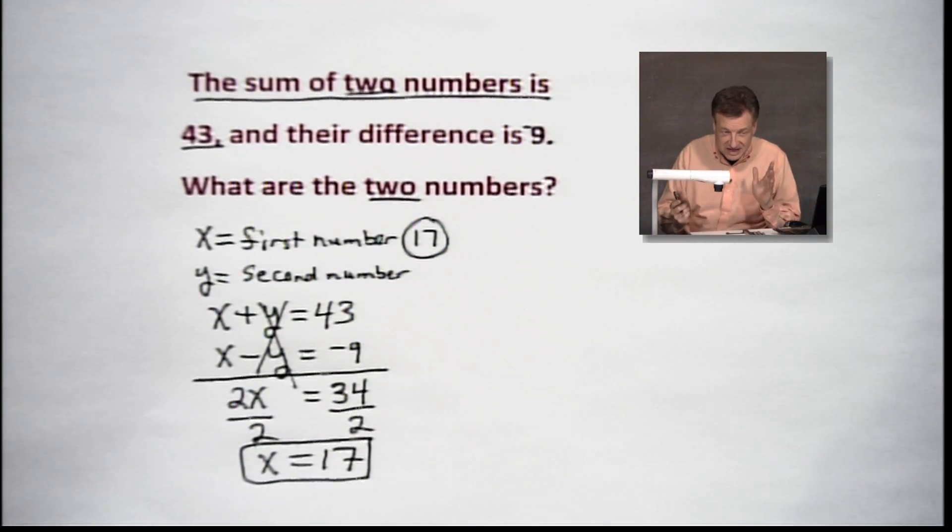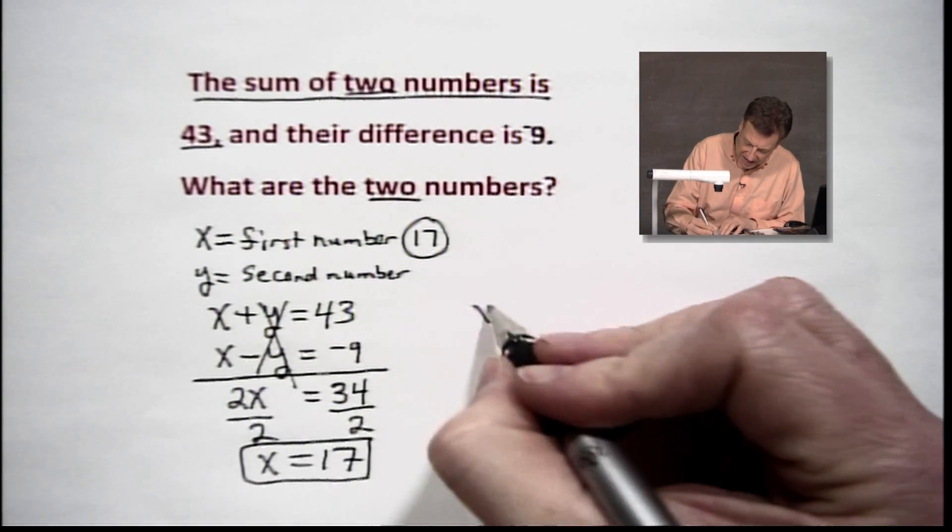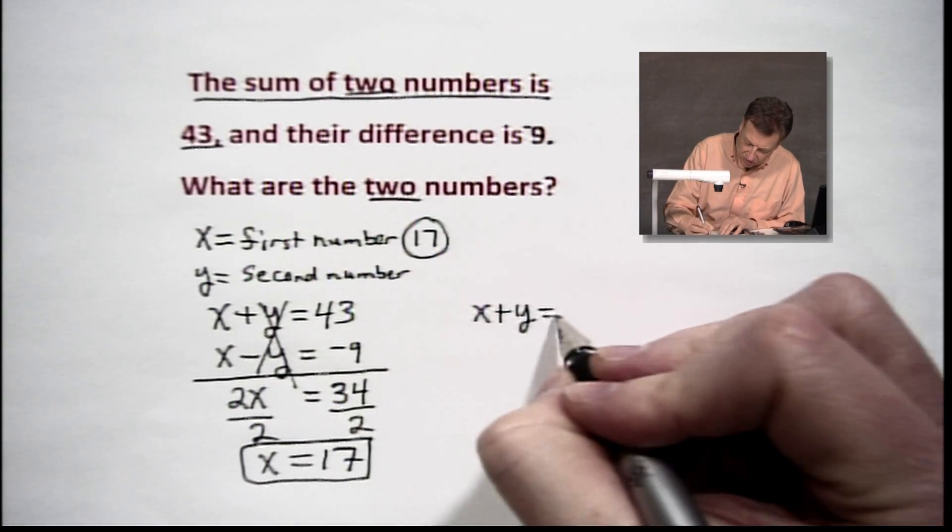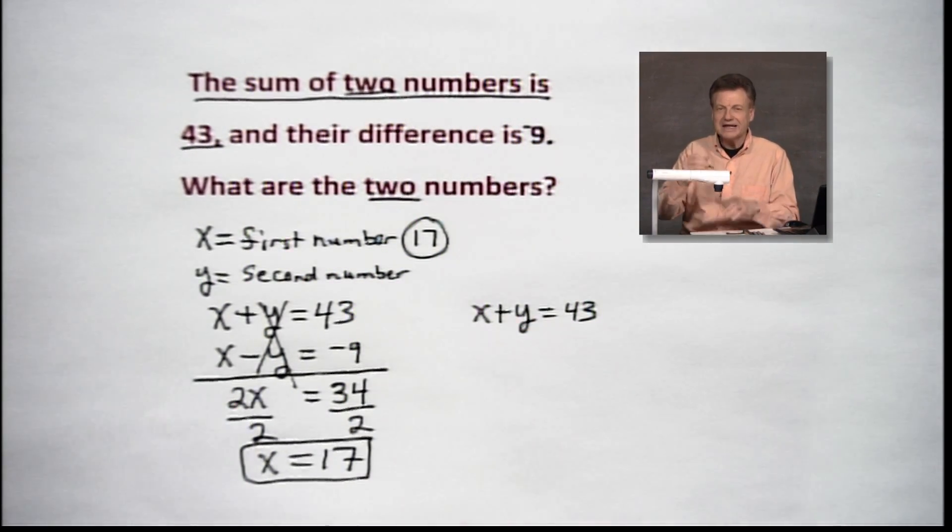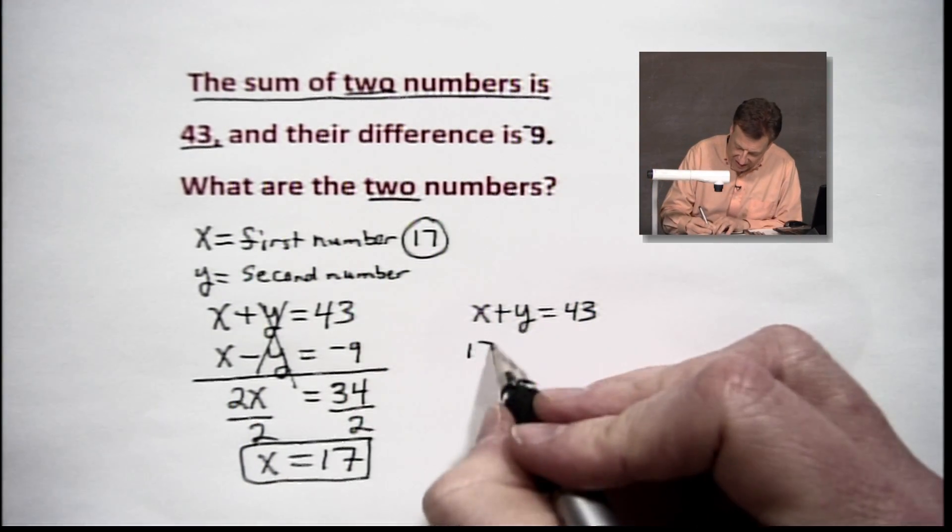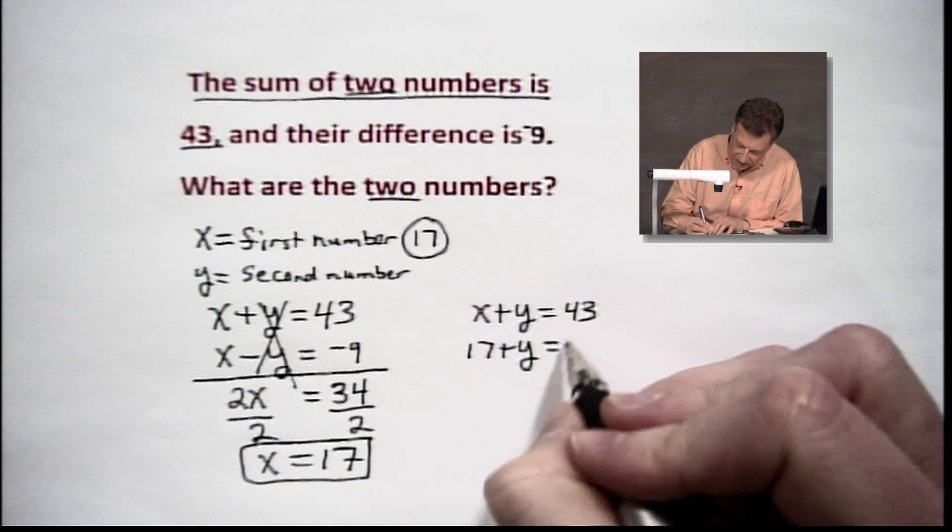Now, let's take one of these equations. Easy one. I think easy one would be X plus Y equaling 43. And since I'm saying X is 17, let's do it. Put a 17 right in there. Plus Y equaling 43.